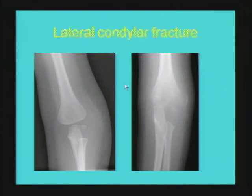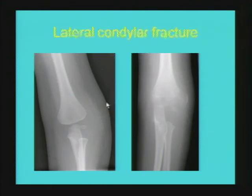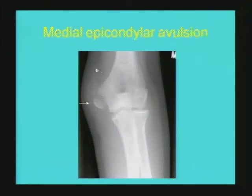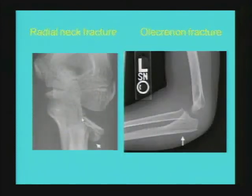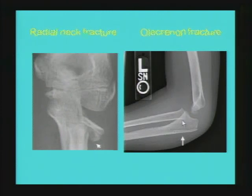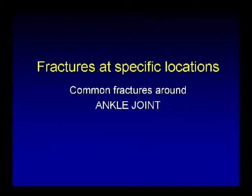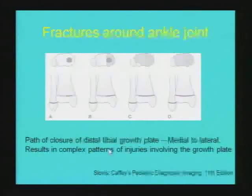Lateral condylar fracture can be subtle, as in this case — soft tissue swelling, with a sliver of bone better appreciated on the oblique projection showing a displaced lateral condylar fracture. Example of medial epicondylar avulsion: soft tissue swelling overlying the medial elbow with displacement of the medial epicondylar ossification center. Example of displaced radial neck fracture. Example of non-displaced olecranon fracture.